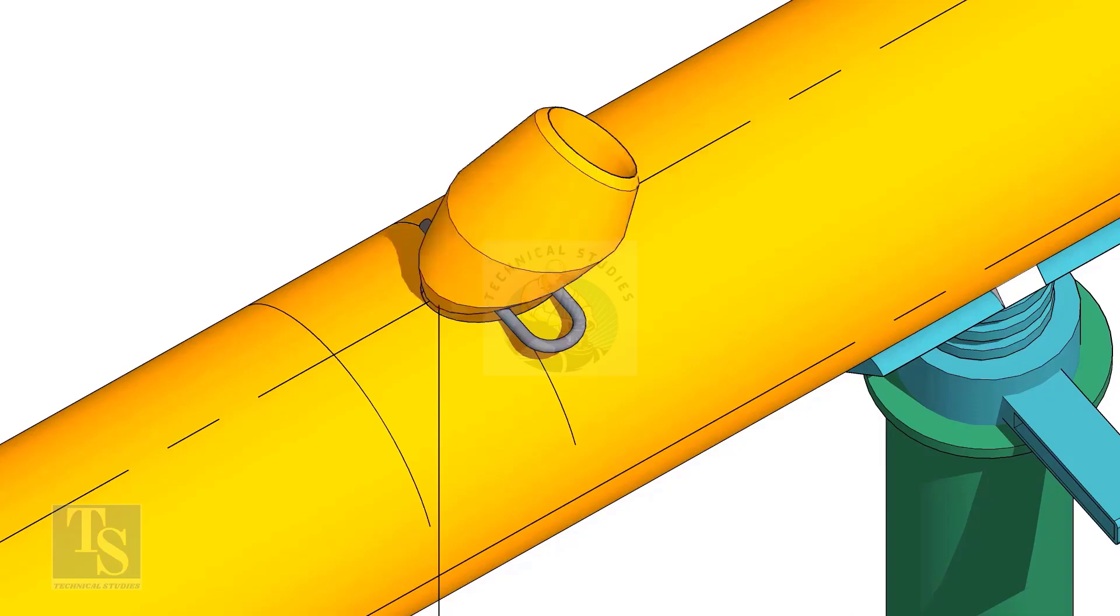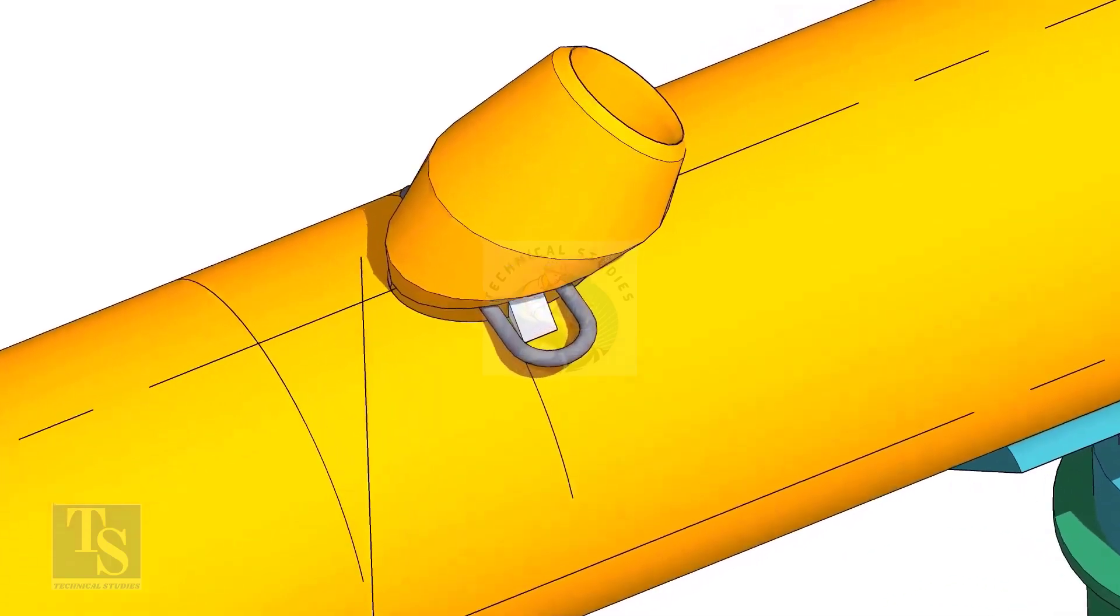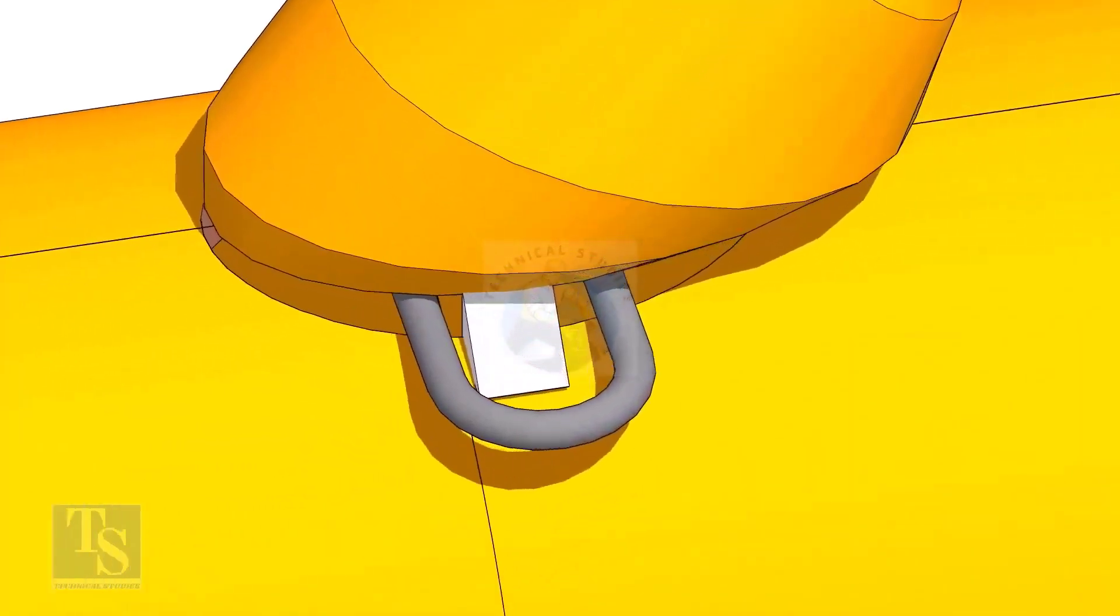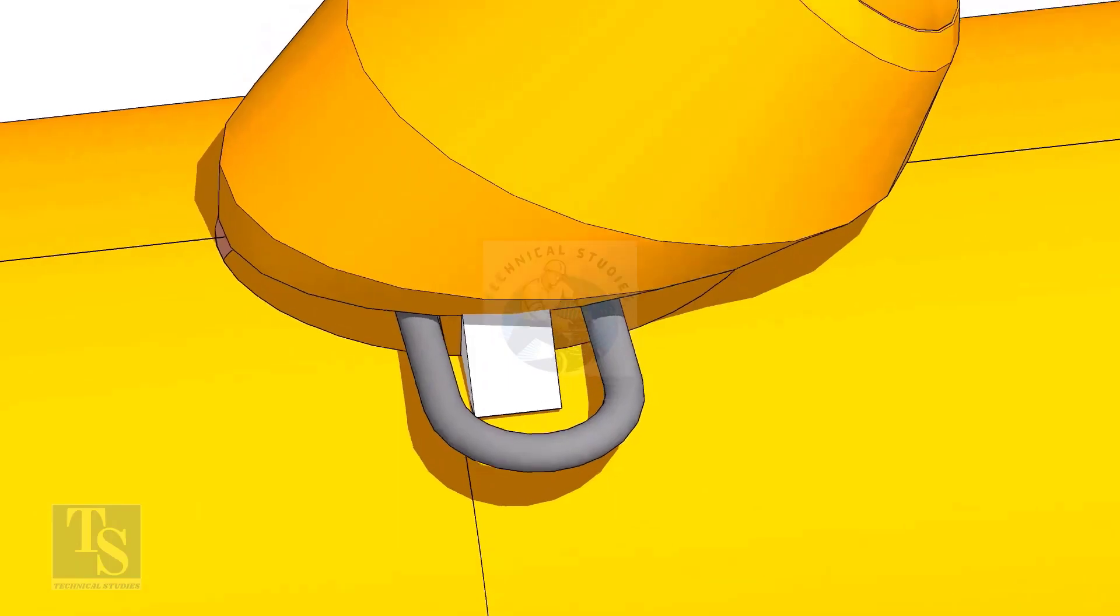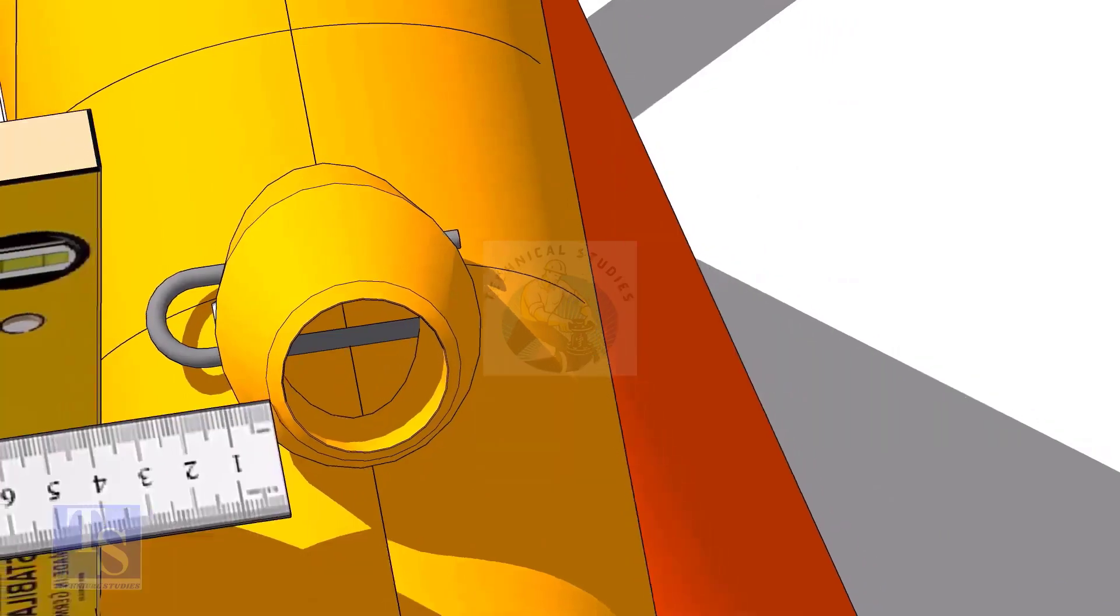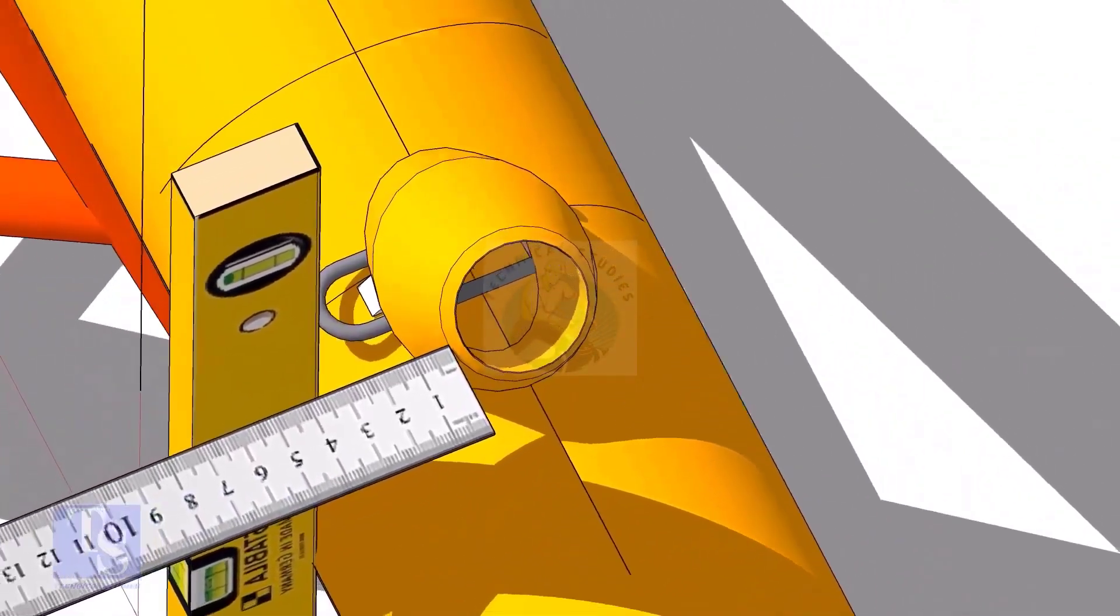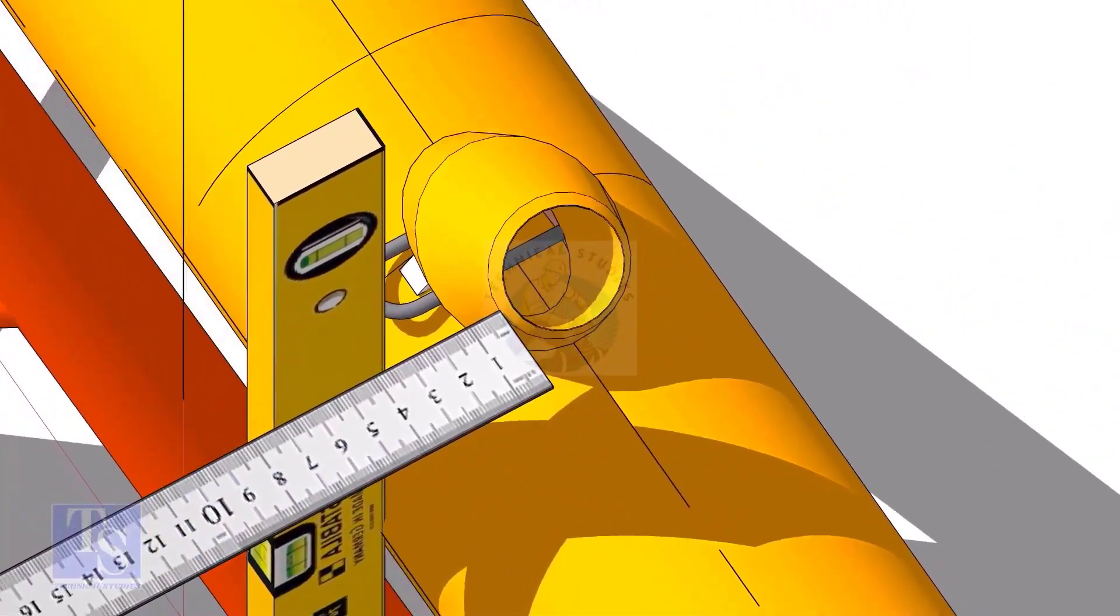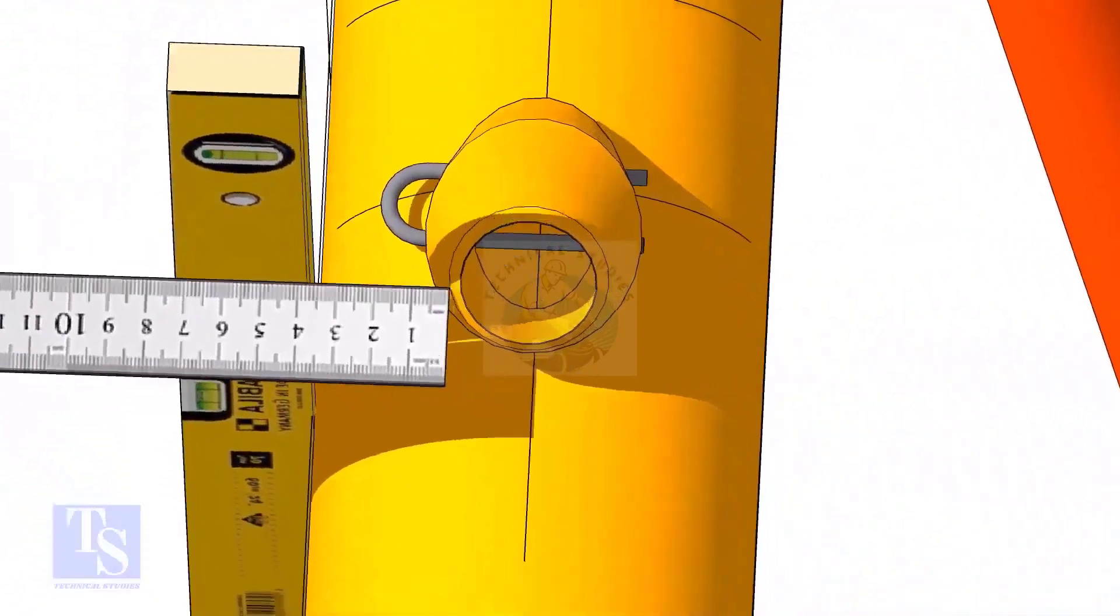Put the laterolette on the center of the hole. Tack weld on one side. Equal the distance from both sides of the laterolette. Tack weld on the other side.